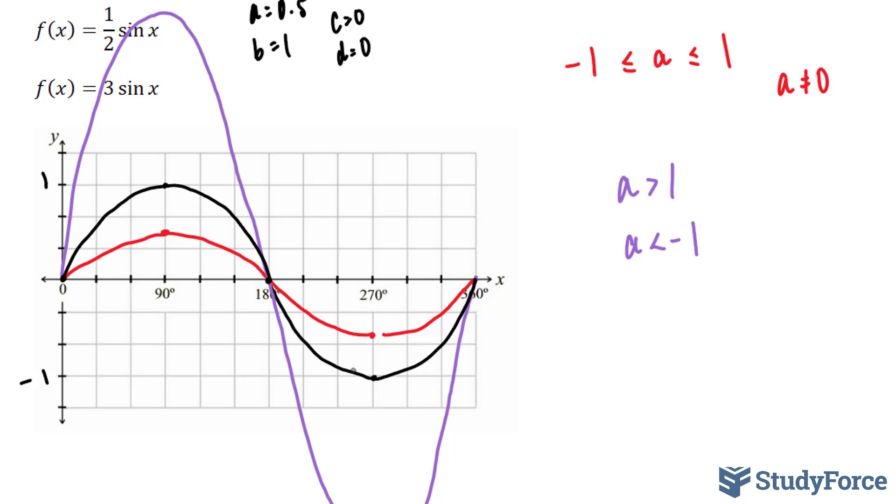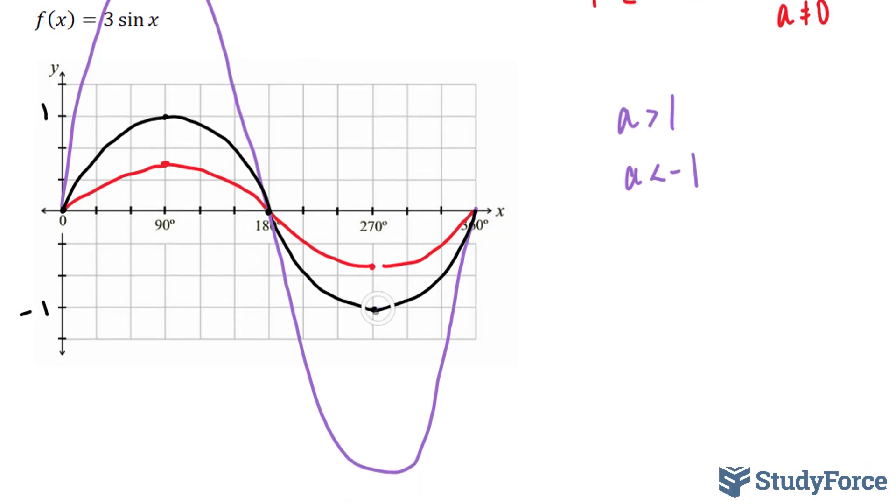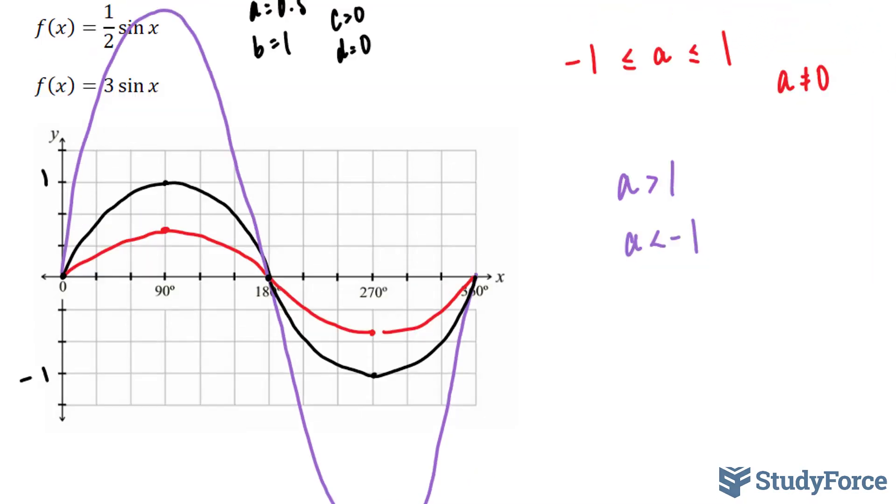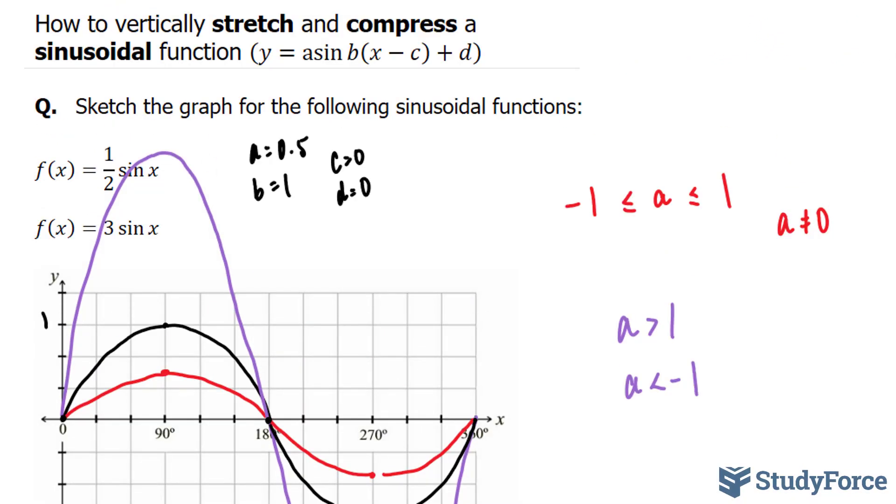...in our case here, multiply that by 0.5. And for the purple, we multiplied negative 1 by 3. And that ended up becoming 270 degrees and negative 3 as the y-coordinate. And so there you have it. That is how to vertically stretch and compress a sinusoidal function.